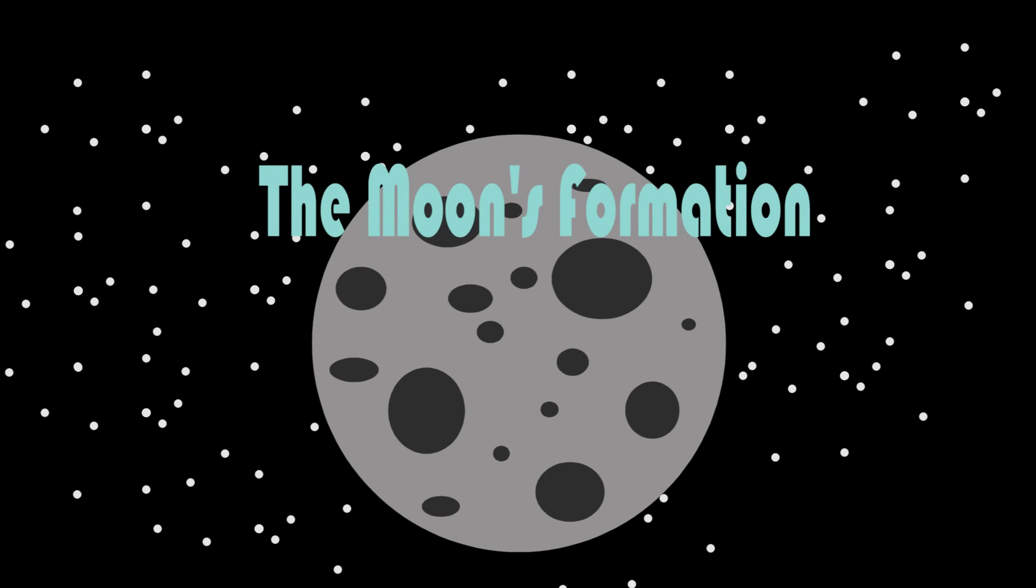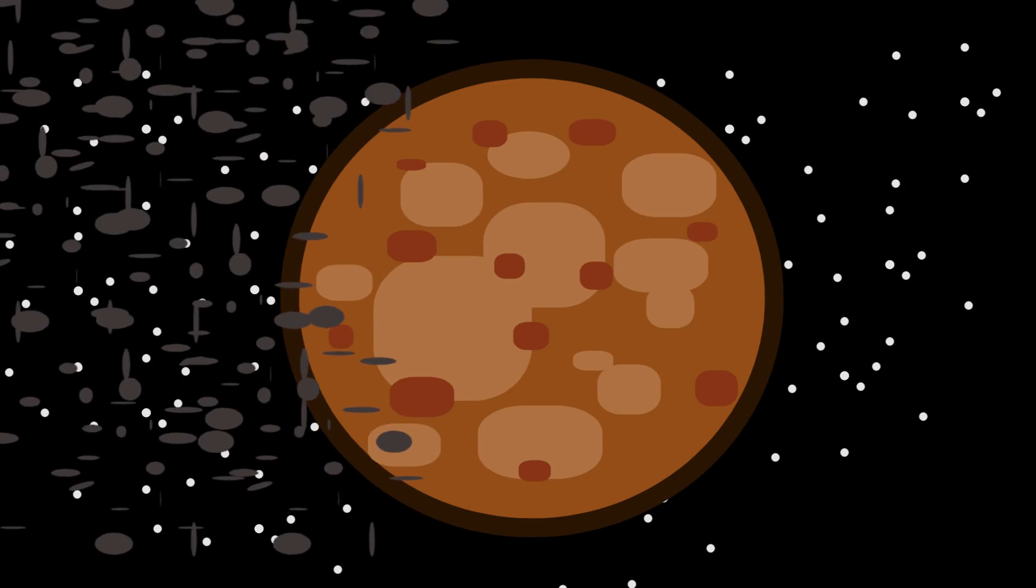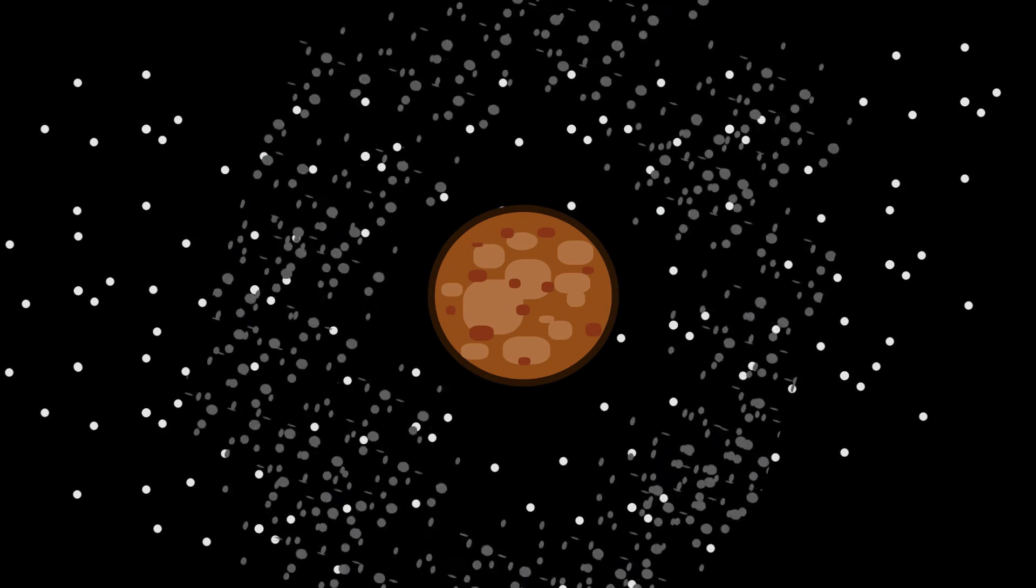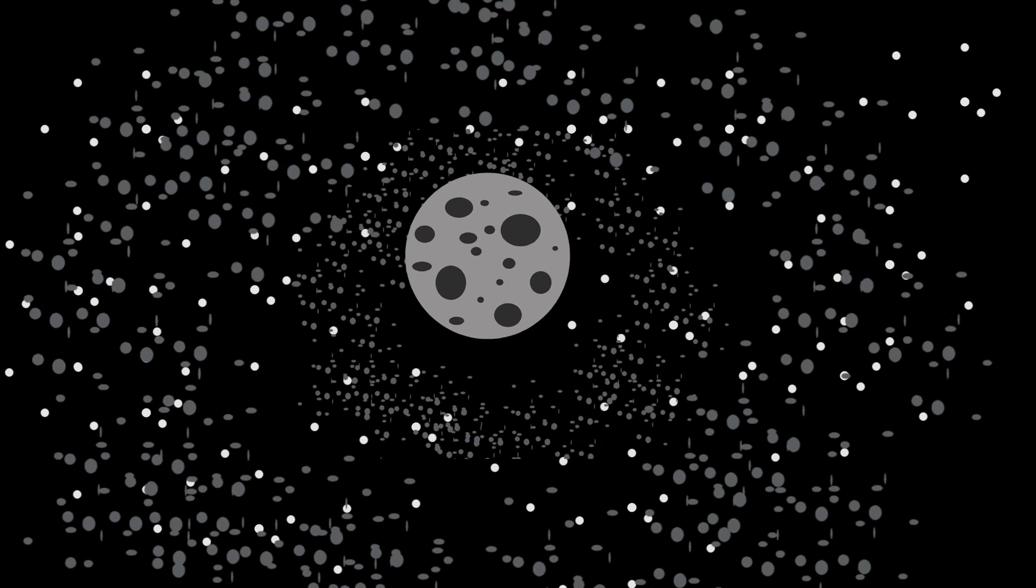Now, we're going to go back about 4.5 billion years ago, 30 to 50 million years after the creation of the solar system. This is when the moon was formed. The moon was formed when a planetoid about the size of Mars struck Earth, and the remaining debris from the collision slowly began to orbit. Similar to the way that the Earth formed around the sun, the moon began to form around the Earth.